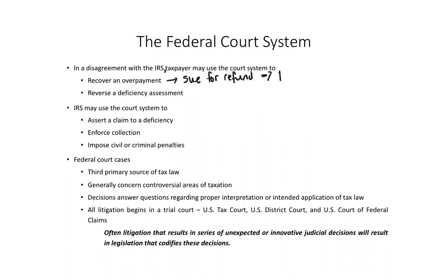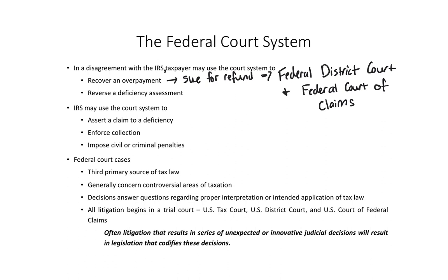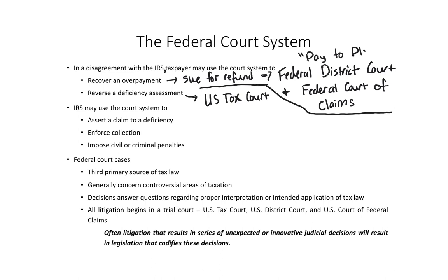Two of those courts require you to sue for a refund — the taxpayer paid what the IRS assessed and is suing for a refund. Those include the federal district court, which is the main trial court for federal cases, and the federal court of claims, which is based in D.C. and hears federal matters including tax cases. The reverse deficiency assessment is solely the U.S. Tax Court — that's the only way. And that's a major reason why taxpayers choose the U.S. Tax Court path, because the taxpayer does not have to pay the tax upfront — they don't have to pay to play.